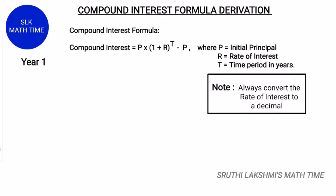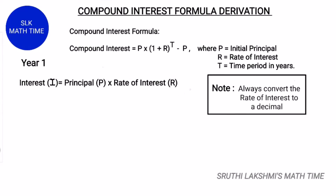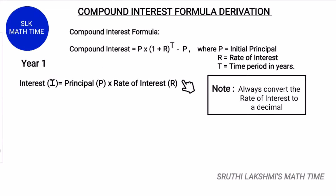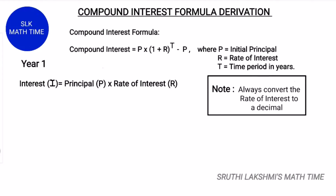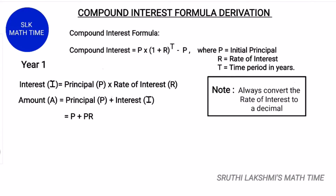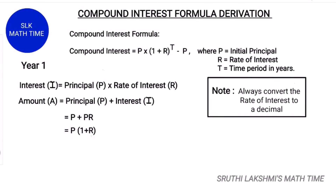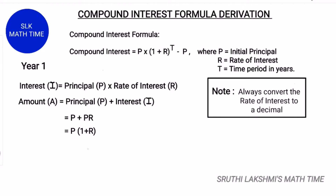So let's see for year 1. As we know, interest is principal into rate of interest into time. Since the time is 1 year, it is basically principal into rate of interest into 1, which is simply principal into rate of interest. And amount is principal plus interest. The principal is P plus the interest, so P plus PR. Here the common variable is P, so we write P into 1 plus R.